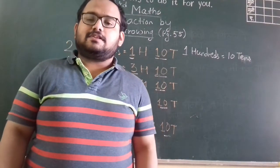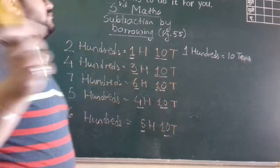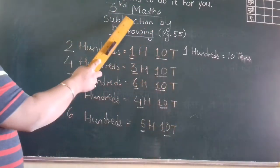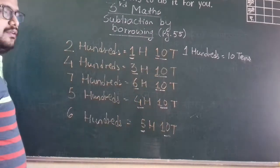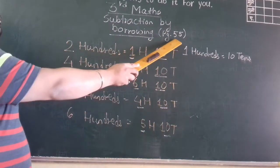Hi children. Today we start standard third maths, chapter subtraction by borrowing, textbook page number 55.